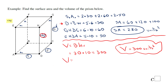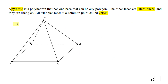An alternate formula for this rectangular prism is length times width times height, and you'll get the same value. But this works only for rectangular prisms — don't use this formula for any other prism.